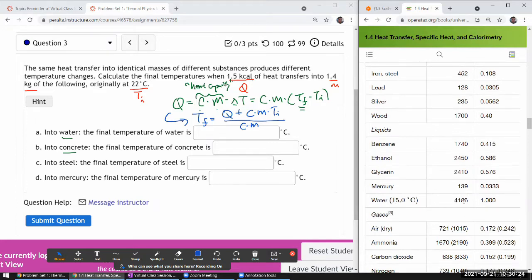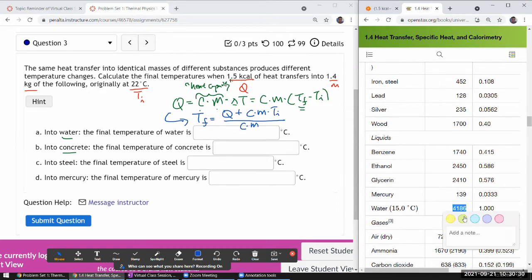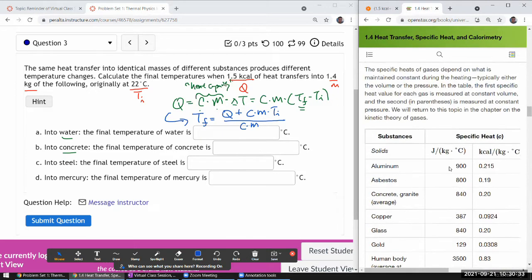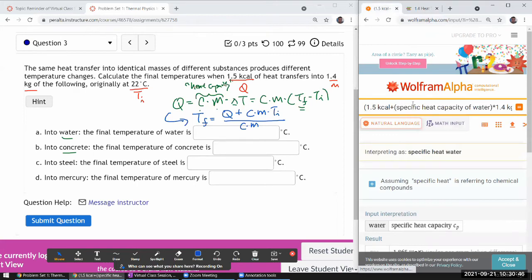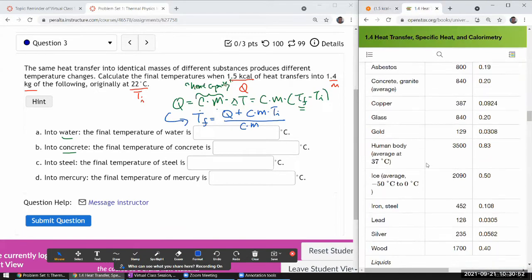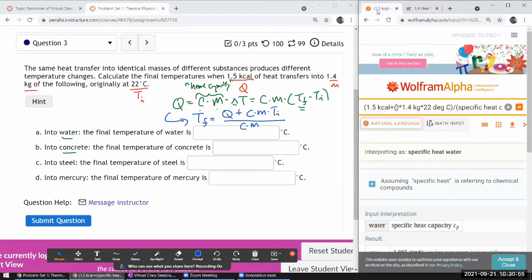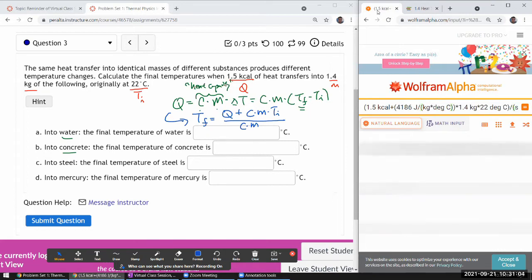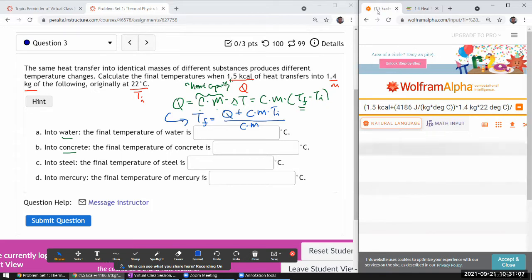So I'm going to do something that normally I wouldn't recommend, but let me do it to show off Wolfram Alpha's capability. So I'm going to use this number 4186, which is in units of joules per kilogram degrees C. This joule doesn't match with the unit of kilocalories, so normally I wouldn't recommend doing what I'm going to do, but Wolfram Alpha is able to do the conversion. So let me just copy that number and it's joules per kilogram times degrees C. Okay, I think now it should be simple enough for Wolfram Alpha to process.